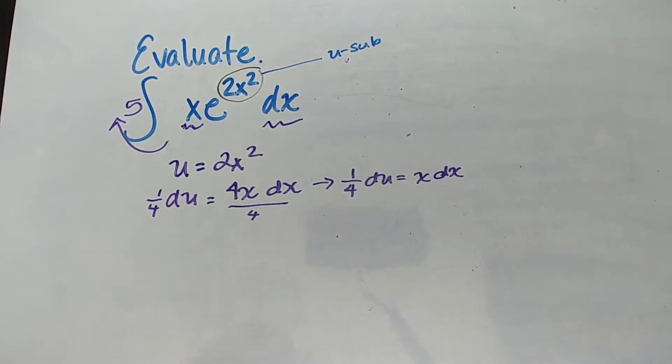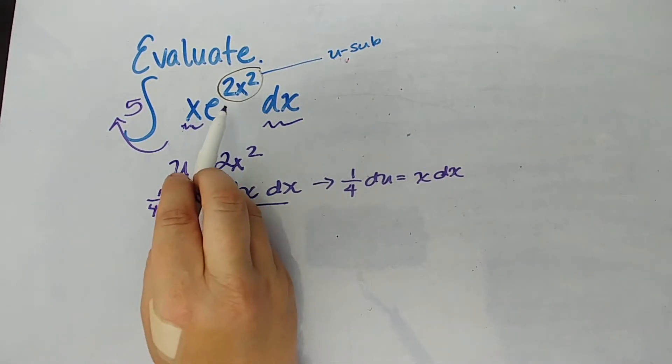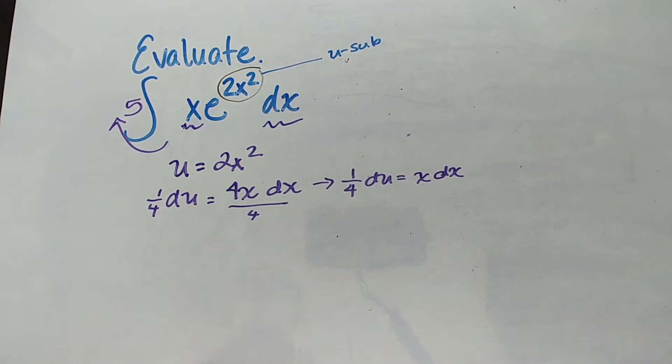So we're going to say one-fourth du equals x dx. So now I have accounted for everything in this problem. I have an x dx. I'm going to say e to the u and I'm going to be able to integrate this super easily. All right so let's do this.